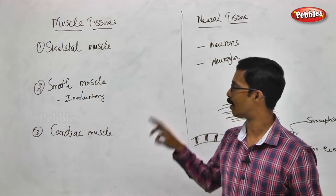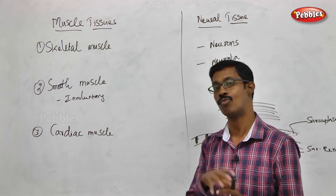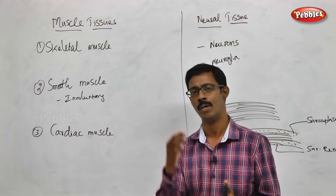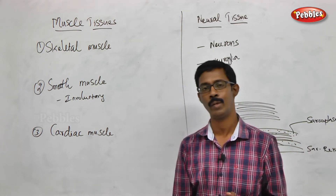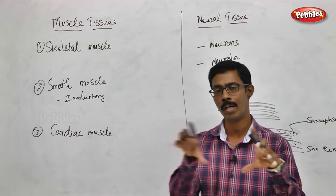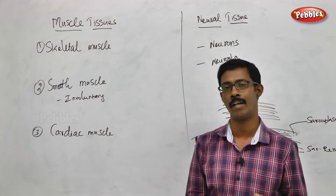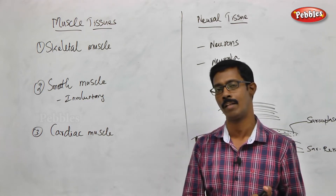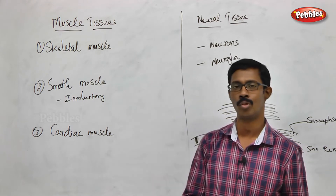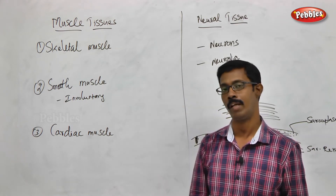What is the difference between the three muscle types? In skeletal muscles, the striated appearance is very clear. They are tightly bundled with closely packed connective tissue and interconnected fibers. The striated appearance is very prominent in skeletal muscles.